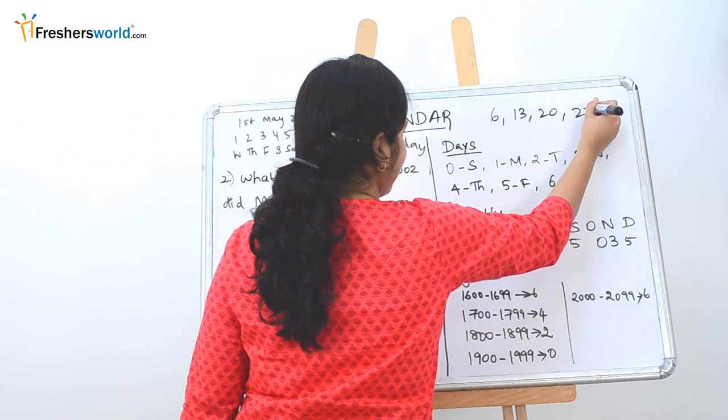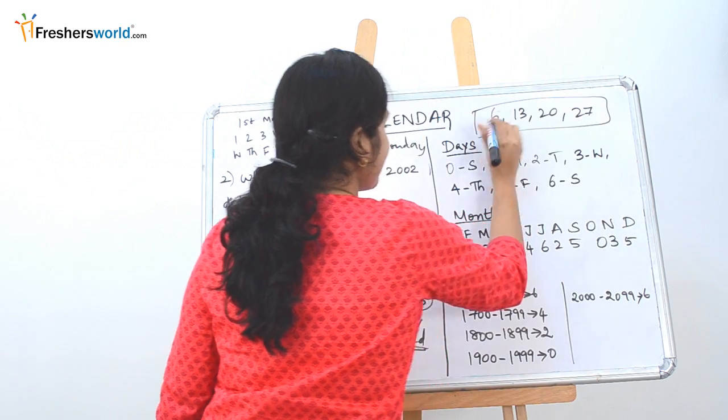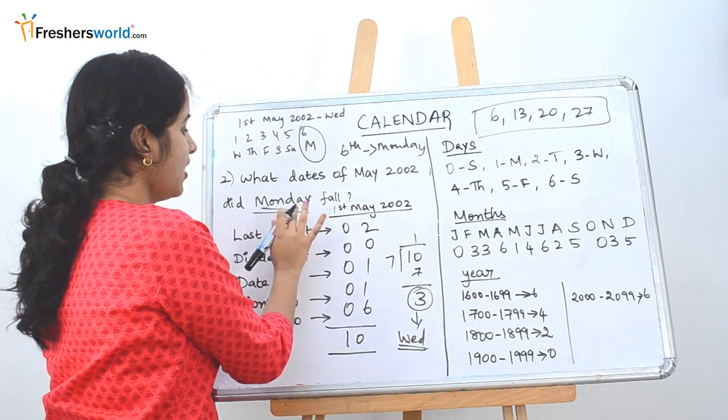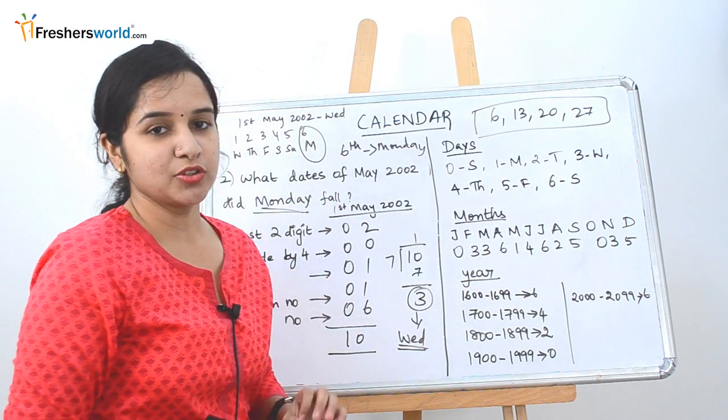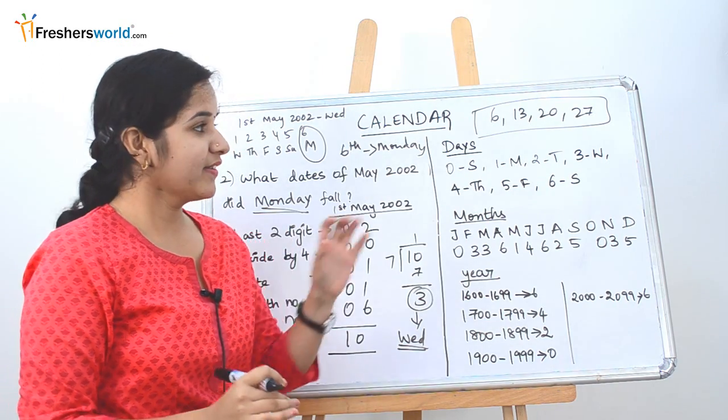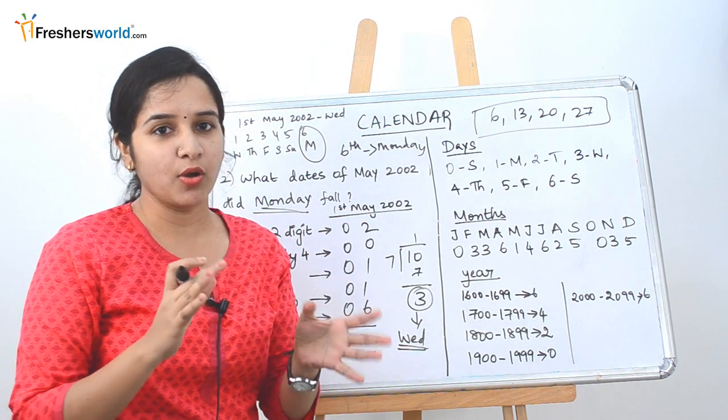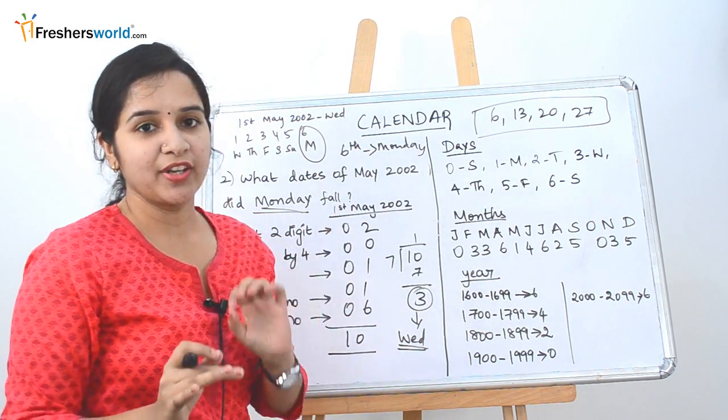13th, 20th, 27th. So these are the various dates that will fall on Monday, on May 2002. So how do they give the options here? They will give you 4 different dates in all the 4 options and they will ask you to find the correct one.